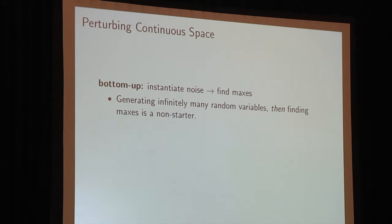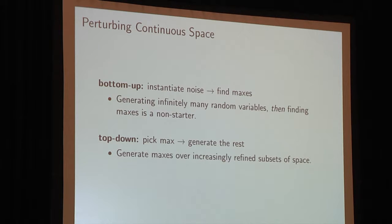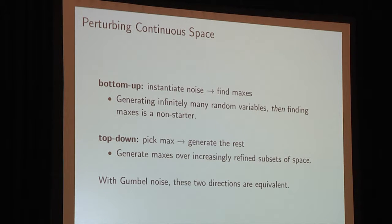The problem with moving directly from the discrete case to the infinite case is that generating infinitely many random variables and finding the maxes is a complete non-starter — that's the bottom-up approach. It would be really nice if, on the other hand, we could go top-down: pick the max and its location and then generate the remainder of the process, generating maxes over increasingly refined subsets of space. It's a remarkable property of the Gumbel distribution that in the discrete case, both directions are equivalent, and that gives us the leverage to move into infinite spaces.